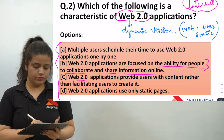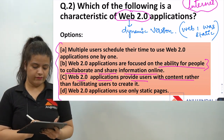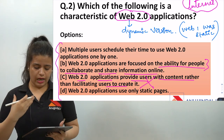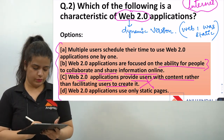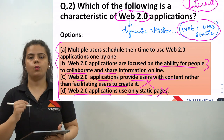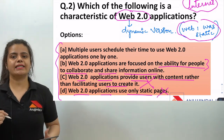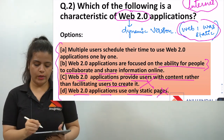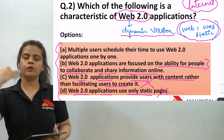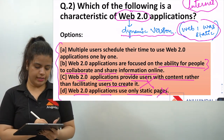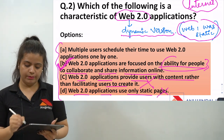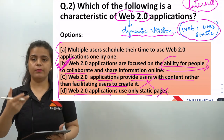Option C: Web 2.0 applications provide users with content rather than facilitating users to create it — this is wrong, because you can create and use content. Option D: Web 2.0 applications use only static pages — this is also wrong. Web 1 was static, not Web 2.0. Web 2.0 is the dynamic version because it is the latest, updated version. So the correct answer is option B: Web 2.0 applications are focused on the ability of people to collaborate and share information online.